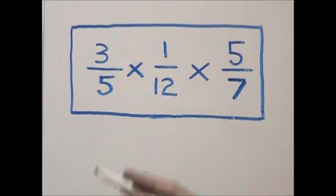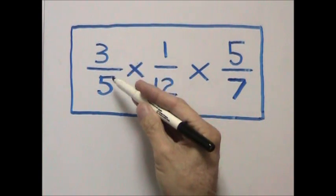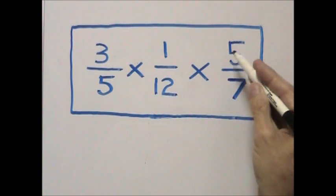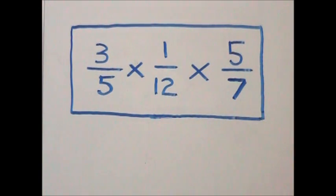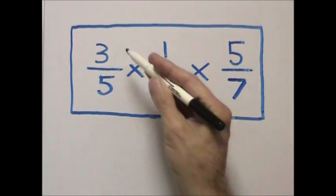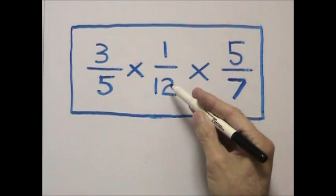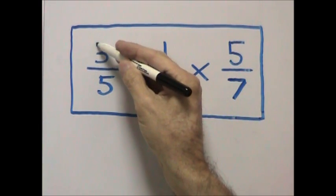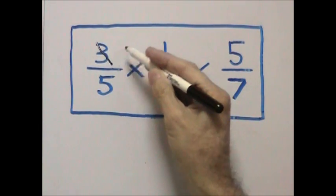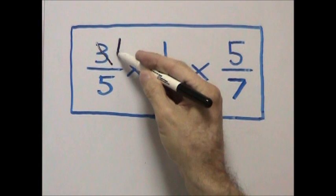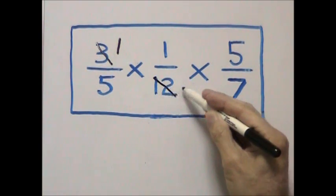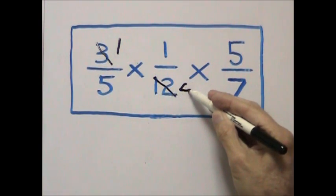Our problem is 3 fifths times 1 twelfth times 5 sevenths. Before we multiply, we can check to see if we can cross-cancel. Here we can. We can cross-cancel the 3 and the 12 since 3 is a factor of 12. 3 goes into itself once, and 3 goes into 12 four times.